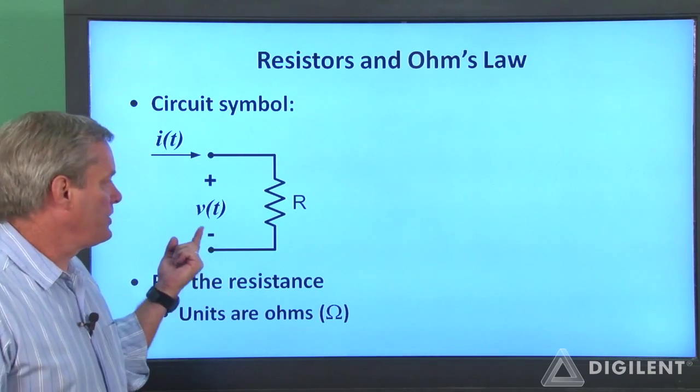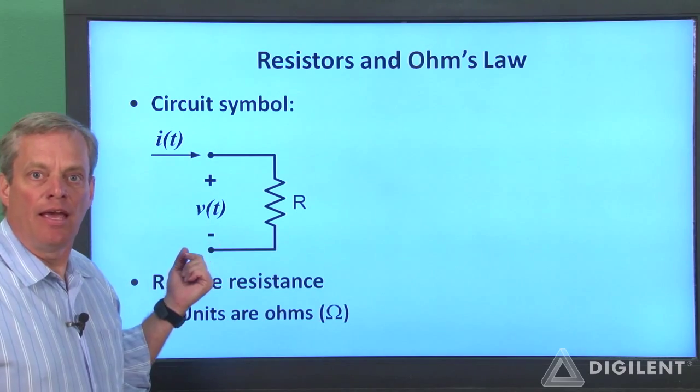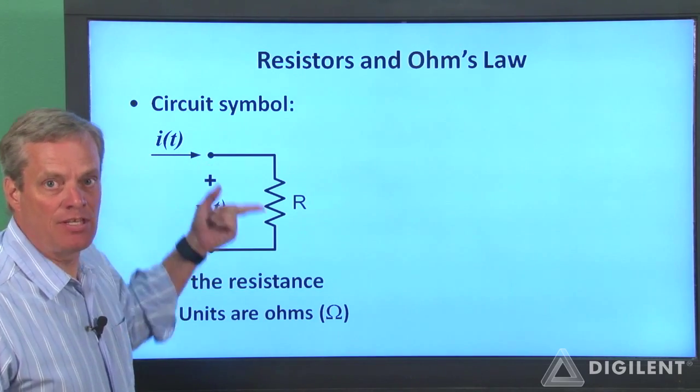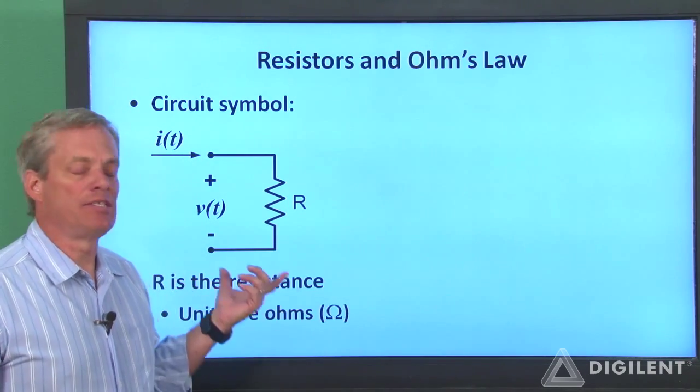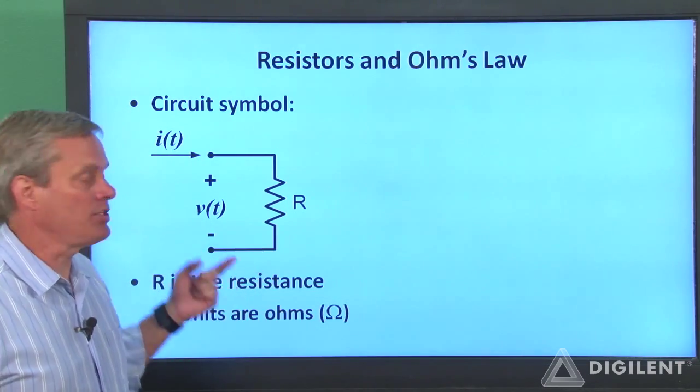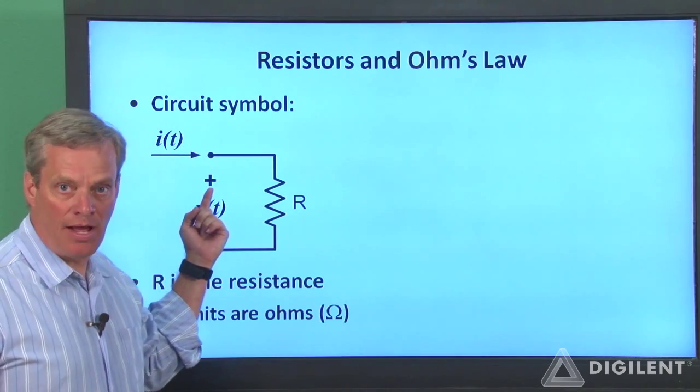Now let's define a voltage difference, V of t, across the resistor terminals and a current, I of t, through the resistor. Notice that we've defined voltage and current to be consistent with the passive sign convention. Current is entering the positive voltage terminal.